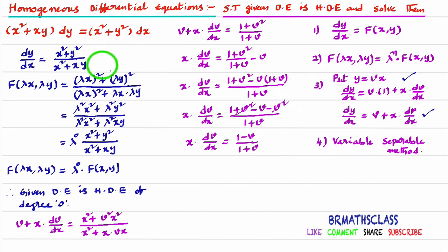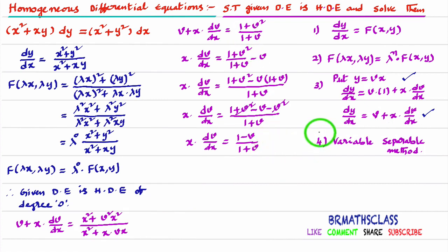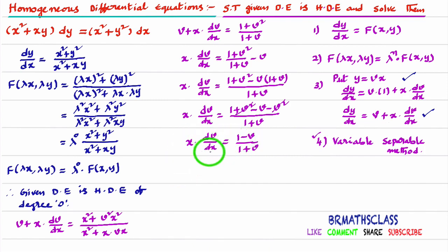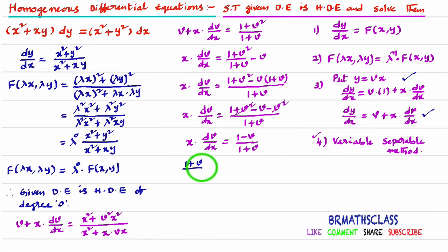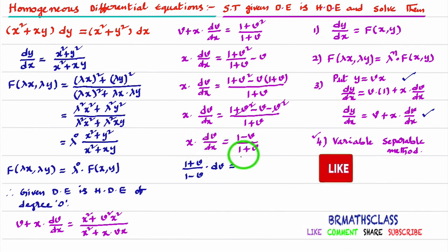Taking LCM as (1 + v): x·(dv/dx) = [1 + v² − v(1 + v)] / (1 + v) = (1 + v² − v − v²) / (1 + v) = (1 − v) / (1 + v). Now we will follow the variable separable method — v variables with dv on one side, x variables with dx on the other side.